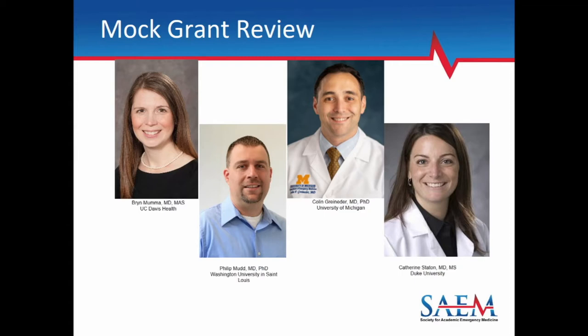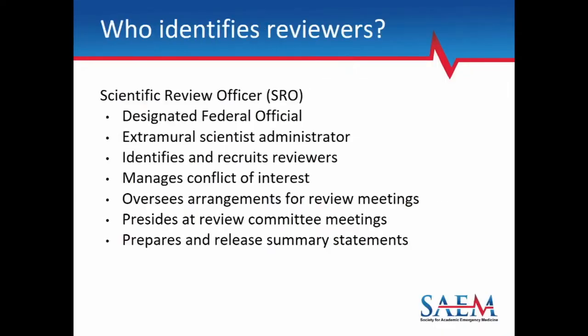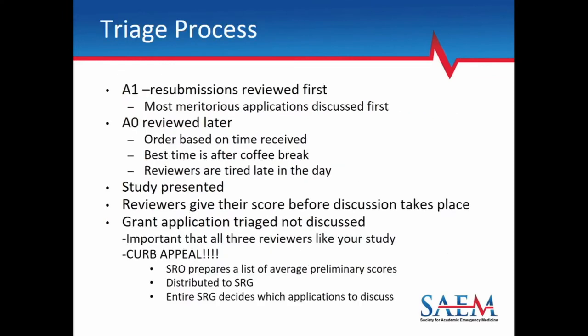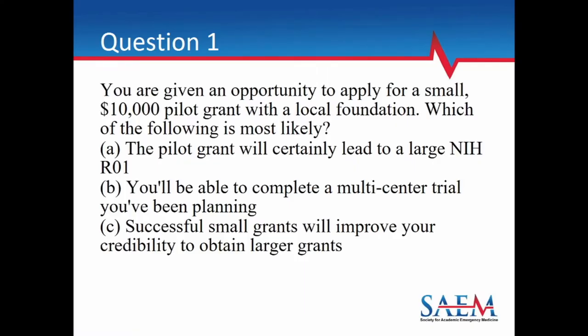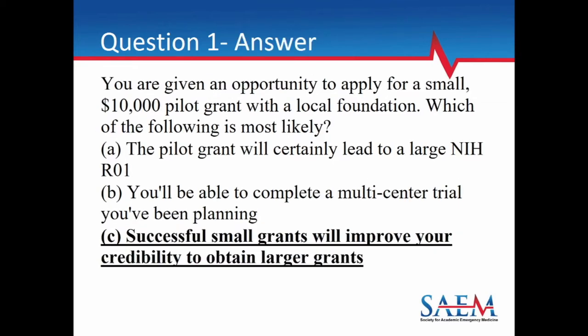Now for the CME questions to see how much you learned. Question 1: You are given an opportunity to apply for a small $10,000 pilot grant with a local foundation. Which of the following is most likely? A — the pilot grant will certainly lead to a large NIH R01; B — you'll be able to complete a multicenter trial you've been planning; or C — successful small grants will improve your credibility to obtain larger grants. The answer is C.